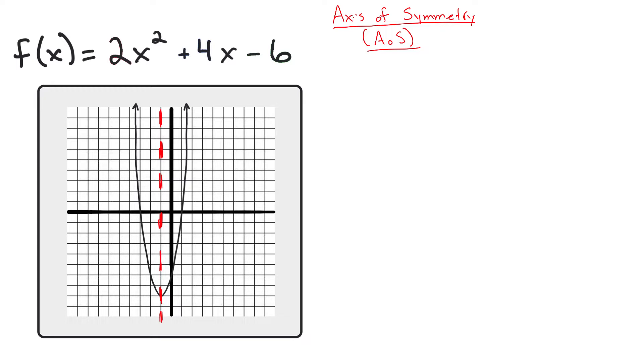To find the axis of symmetry, surprise, surprise, it comes from the quadratic formula. The way we find it is with the equation x equals negative b over 2a. It's the first portion of the quadratic formula. So in this problem, my b value is 4, my a value is 2, therefore it's going to be x equals negative 4 over 2 times 2, which is negative 4 over 4, which is negative 1.